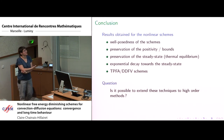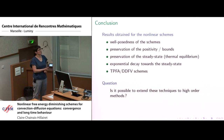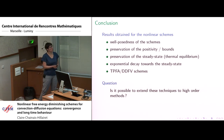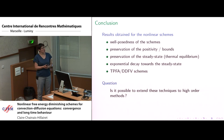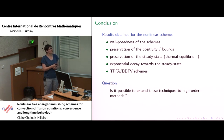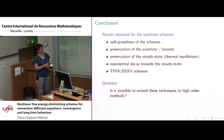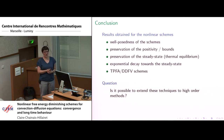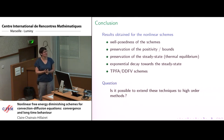As a conclusion, the results obtained for the non-linear schemes are: well-posedness of the schemes, preservation of positivity and bounds, preservation of the steady state when it is a thermal equilibrium, and exponential decay towards the steady state. This works for different kinds of schemes — TPFA schemes on restricted meshes but also DDFV schemes on almost general meshes. My question for those working on VAG, HHO, and related methods: is it possible to extend this kind of technique to high-order methods? Thank you.